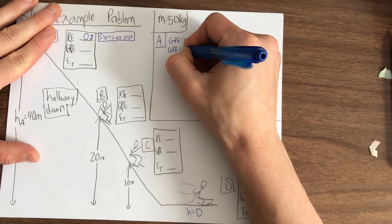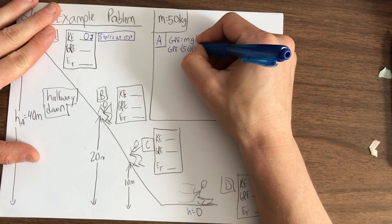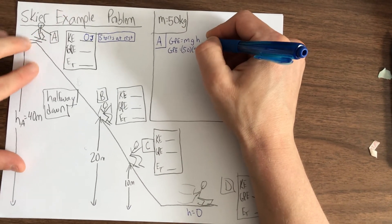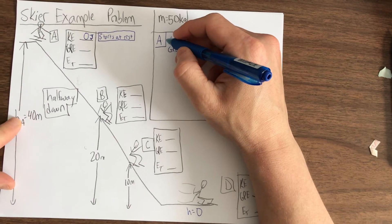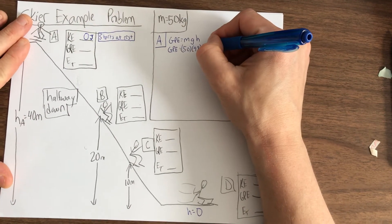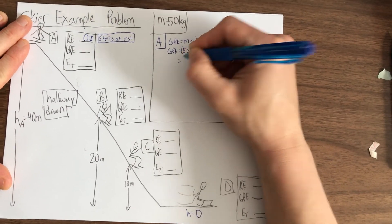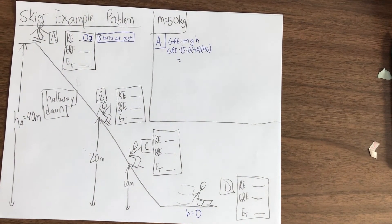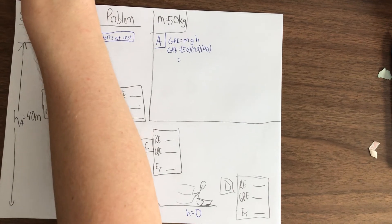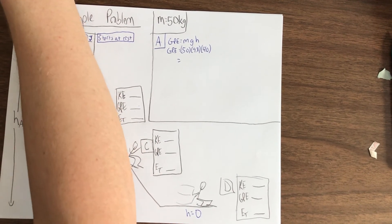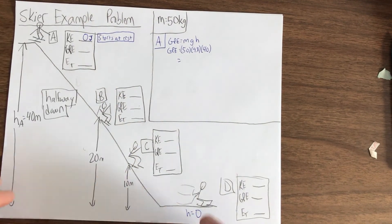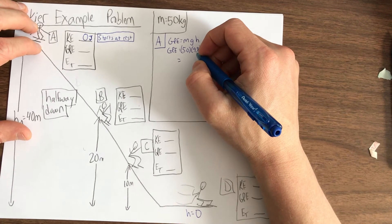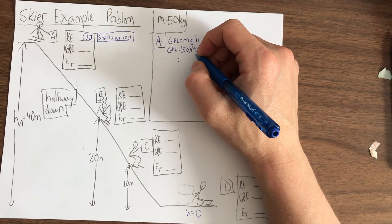So the mass we're given is 50 kilograms, G is 9.8, and the height for letter A is right here, it's 40 meters tall. So I'm going to go to my calculator, 50 times 9.8 times 40, and...